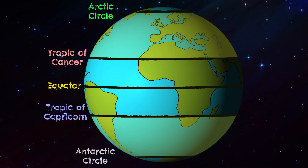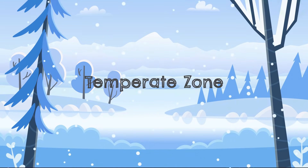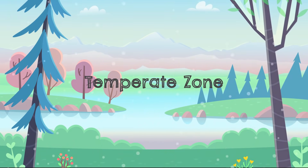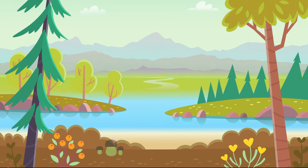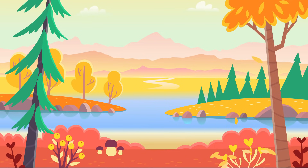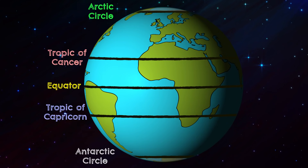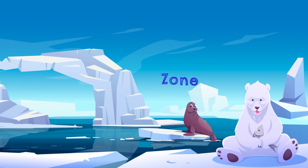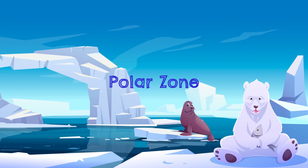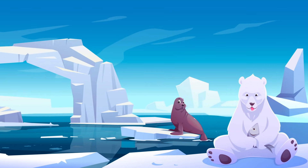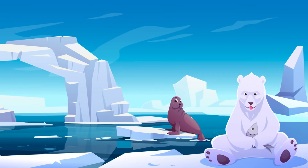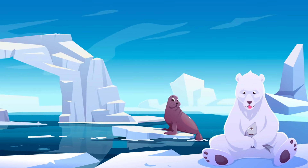The area between the tropics and the polar circles is called the temperate zone, where you can generally experience all four seasons during the year. The area beyond the polar circles is the polar zone, which gets the least direct sunlight and is generally cold and full of ice and snow.